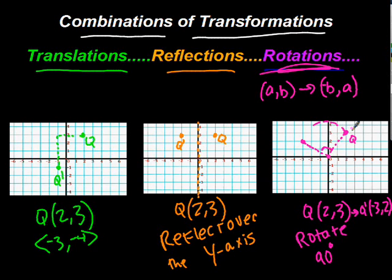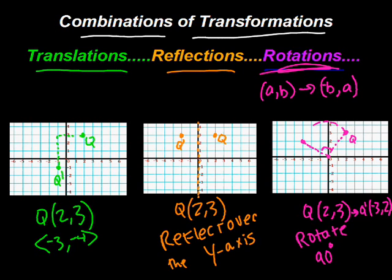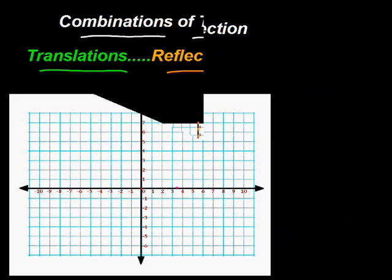Let's move into combinations of transformations. One type of combination is a glide reflection. A glide reflection is when we first translate and we second reflect.